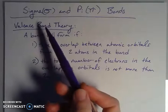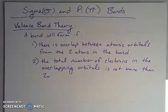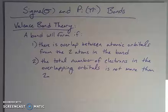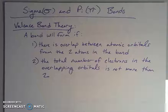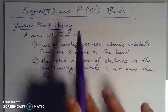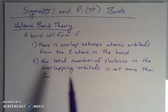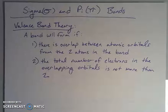We're focusing on sigma and pi bonds. Sigma in Greek is S, and pi in Greek is P. When we're talking about S and P, this relates back to atomic orbitals, because the highest energy S and P electrons on a non-metal are going to be the valence electrons — the outermost, highest energy electrons. And that gets us into valence bond theory.